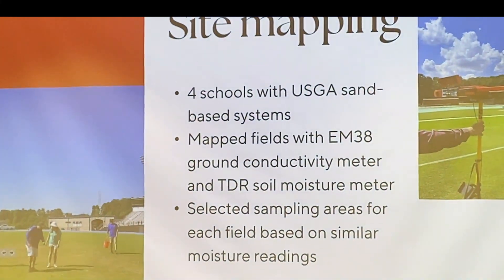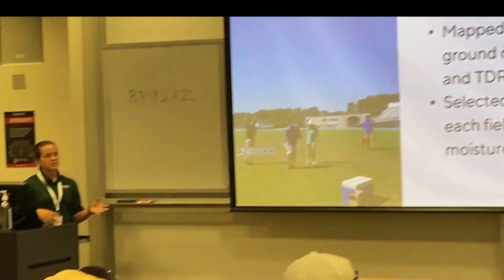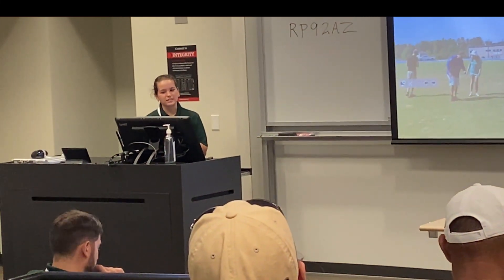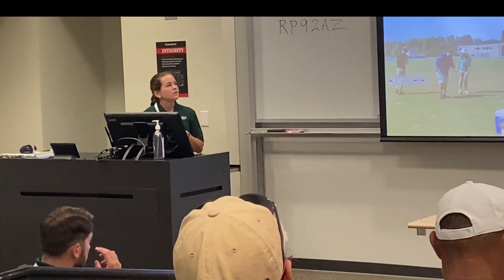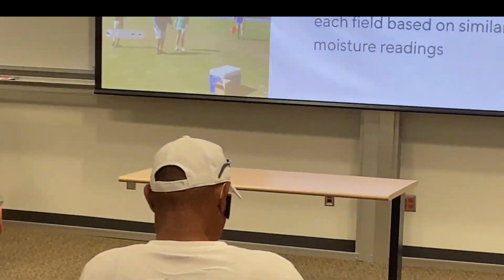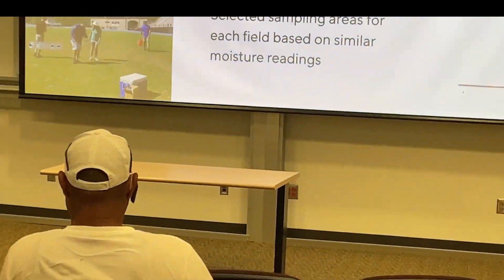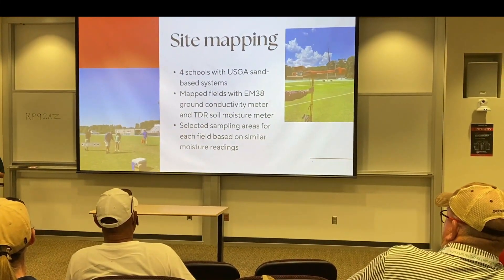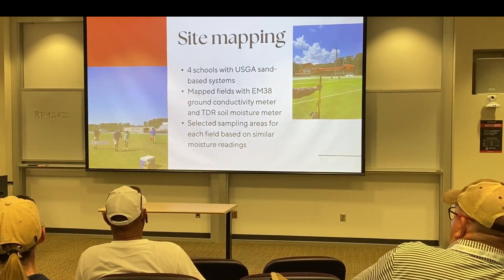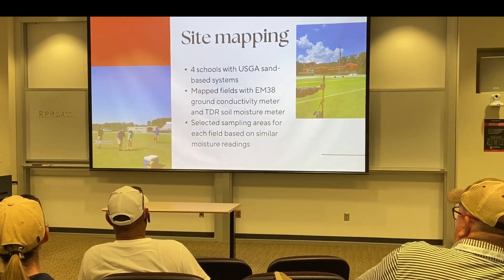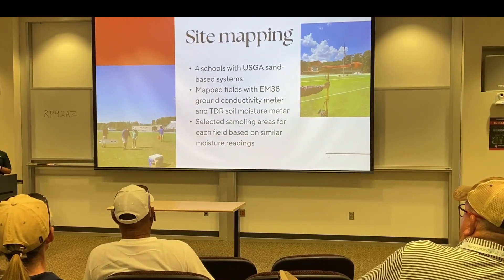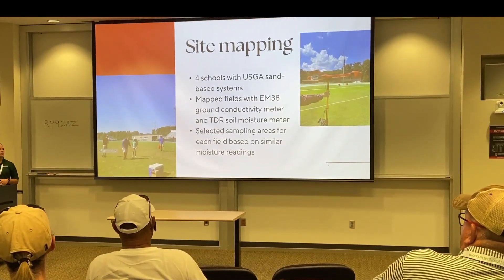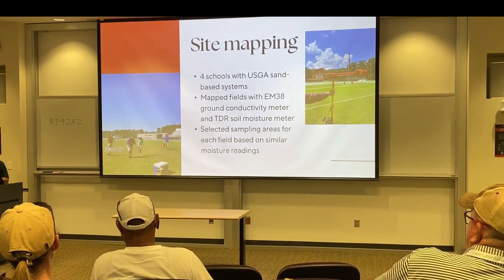We started by figuring out how we were going to survey our fields. We took four different schools in the Atlanta area, all with USGA sand-based systems, because we determined that we could see the paint traveling down in those systems rather than in native soil. We went to these schools and mapped the fields with an EM38 ground conductivity meter.